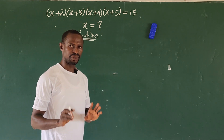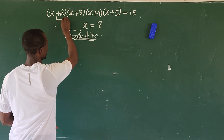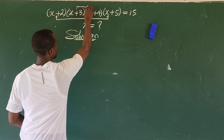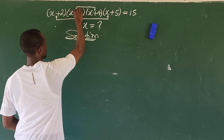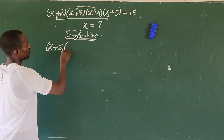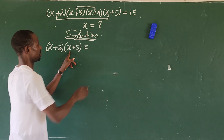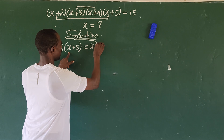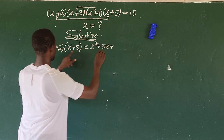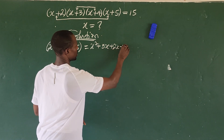Look at what I want to do here — I want to group the numbers. The system of grouping I'm going to apply is: I want to marry (x+2) with (x+5), and (x+3) with (x+4). So for the first pair, (x+2)(x+5) opens up to give x² + 5x + 2x + 10, which simplifies to x² + 7x + 10.